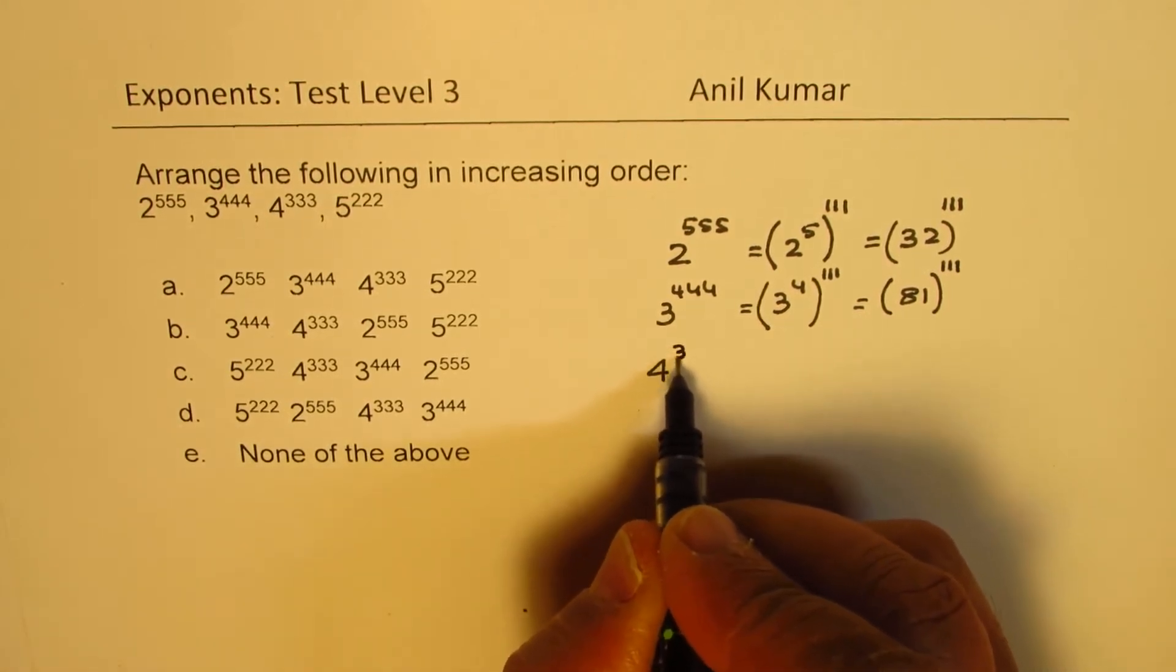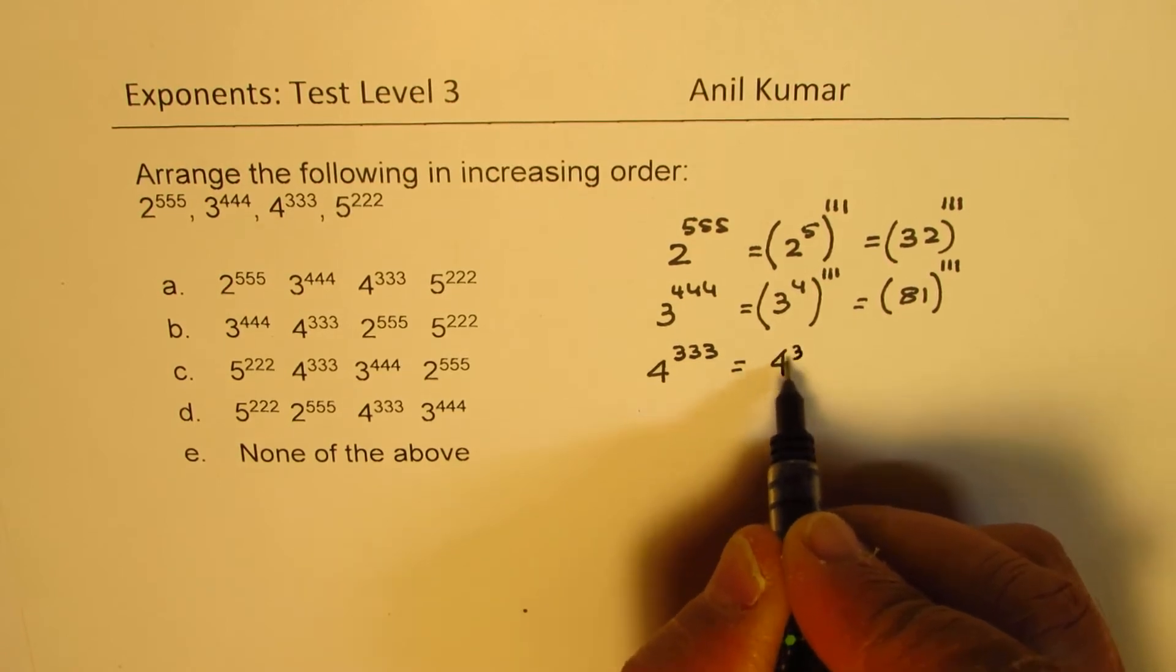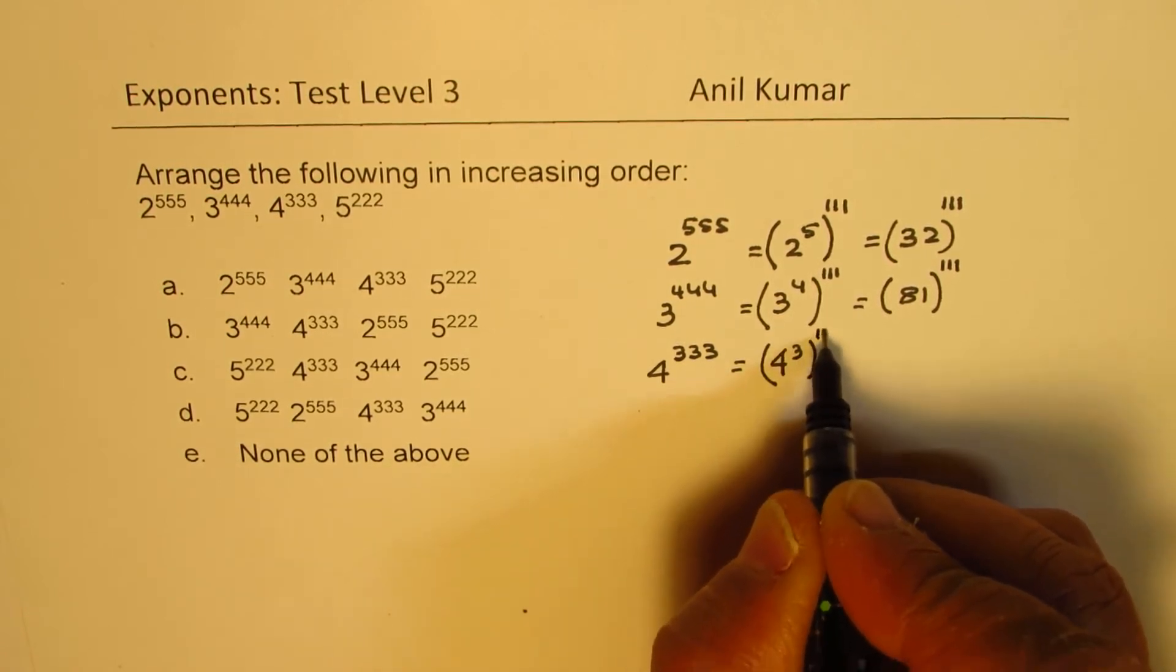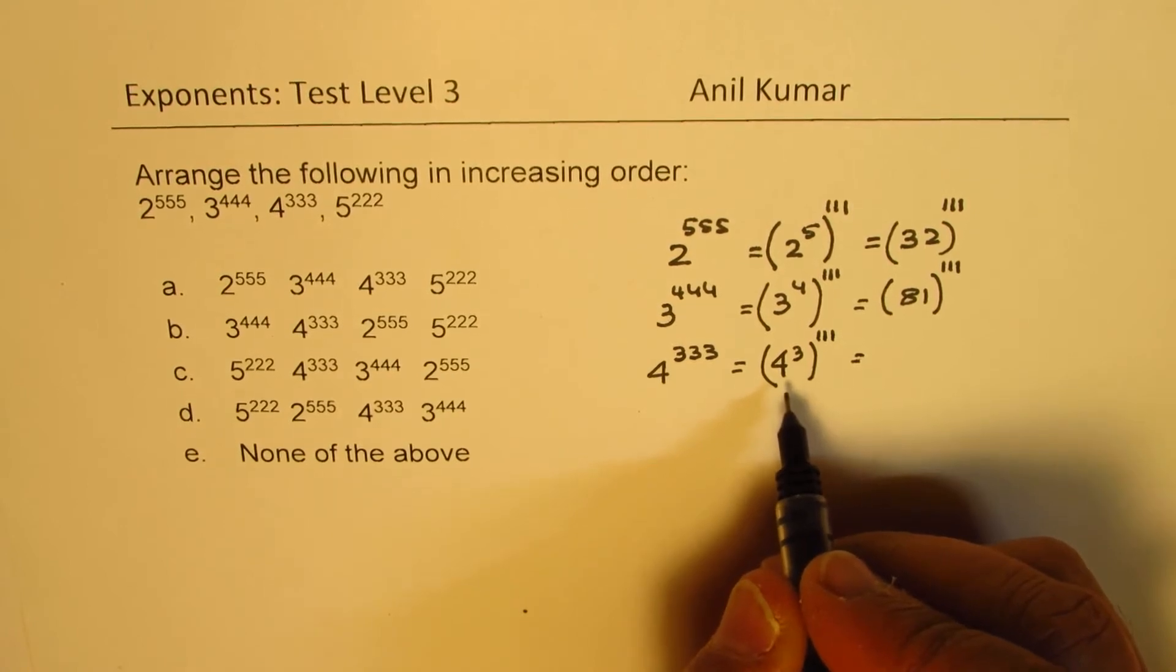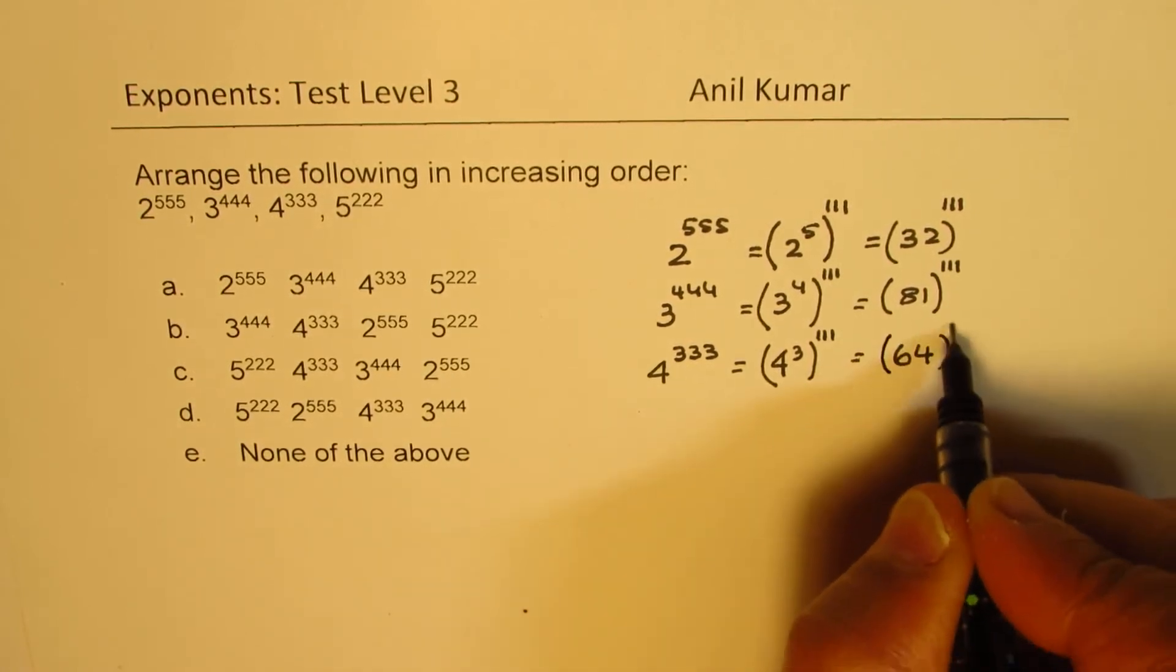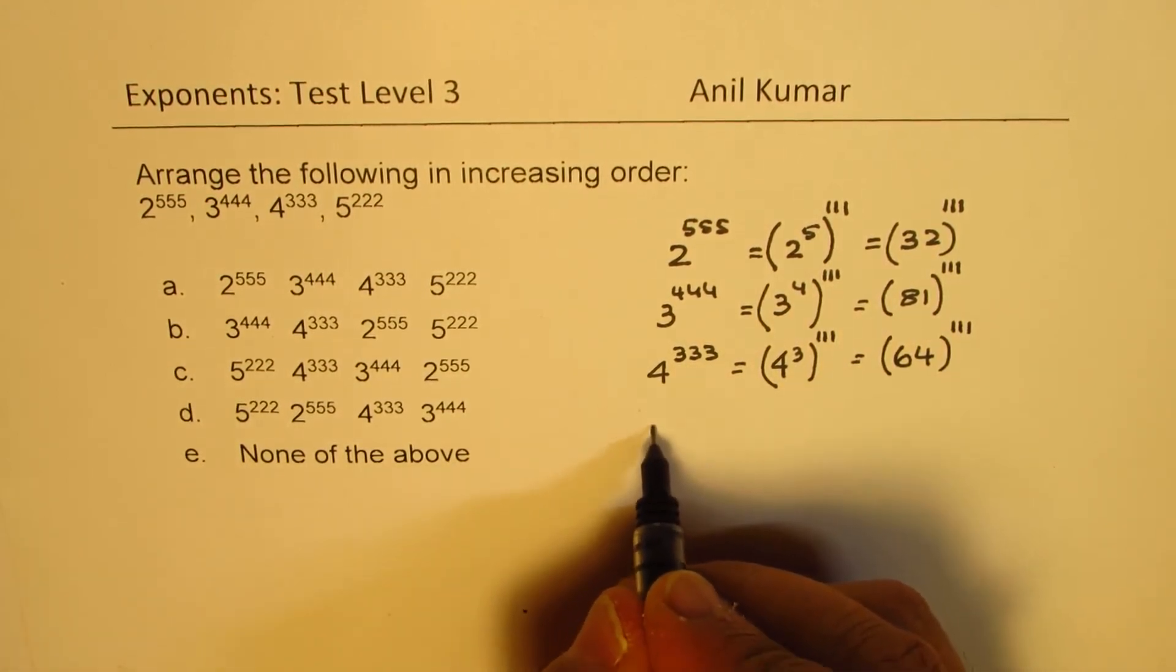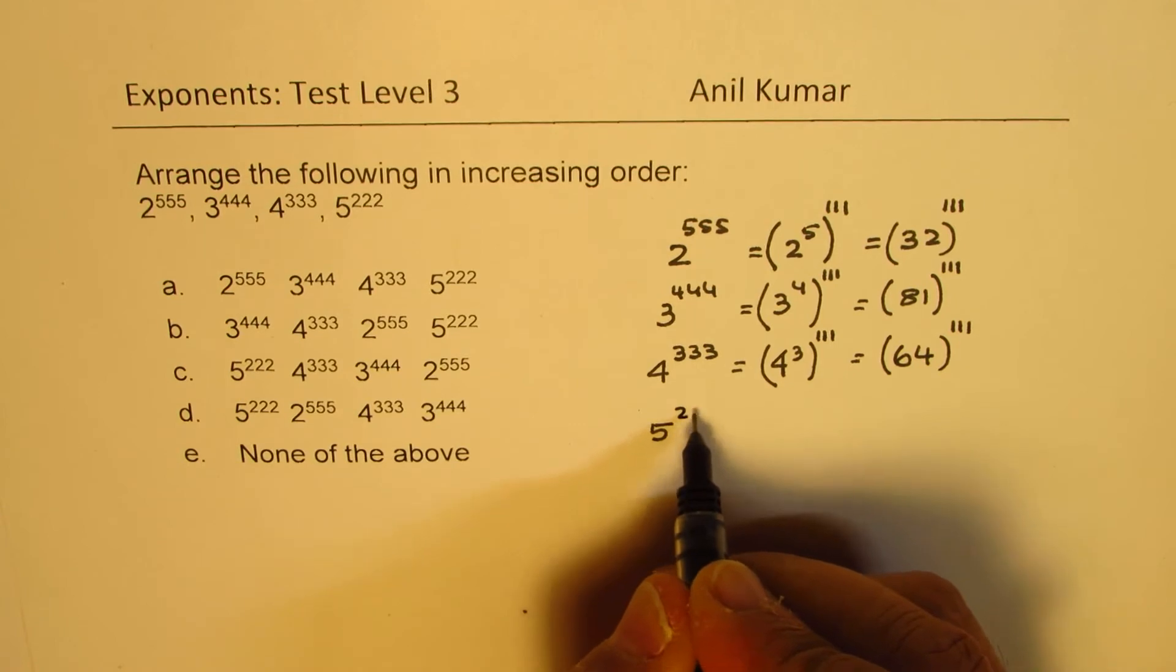4 to the power of triple 3 gives us 4 to the power of 3 to the power of triple 1. 4 times 4 is 16 times 4 is 64 to the power of triple 1. So, all these exponents now are same, and therefore, we can easily compare them.